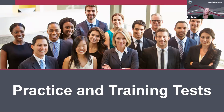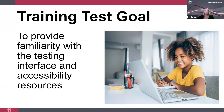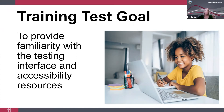We're going to start with the practice tests and the training tests as resources for student practice. Let's start with the training tests. The goal of the training tests is to help students become familiar with the testing interface and the available accessibility resources — that includes universal tools, designated supports, and accommodations. There are fewer items on the training tests than the practice tests, and there are no scoring guides available for the training tests. However, students can practice using those accessibility resources, which are all available in the training tests.